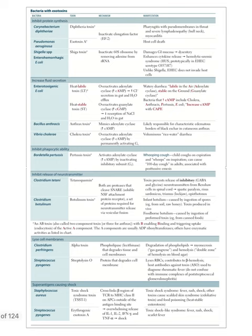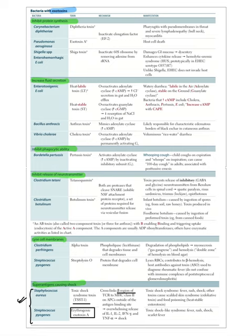Exotoxin mechanisms: inhibiting protein synthesis, increasing fluid secretion, inhibiting phagocytic activity, inhibiting neurotransmitter release, lysing cell membrane, and acting as super antigens. Super antigens like TSST-1 and erythrogenic exotoxin A bind to the Vβ region of TCR and MHC class II, causing massive cytokine release including IL-1, IL-2, and gamma interferon, leading to fever and shock.